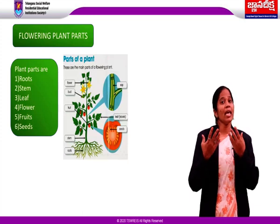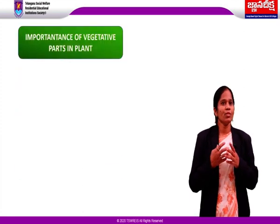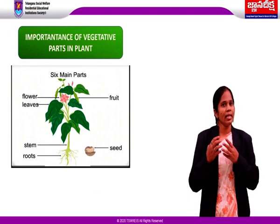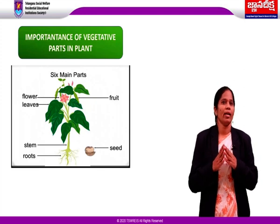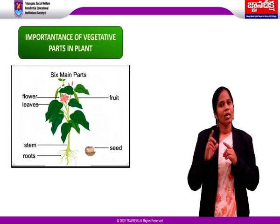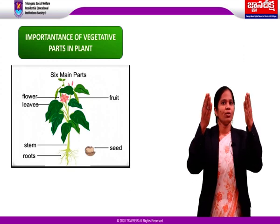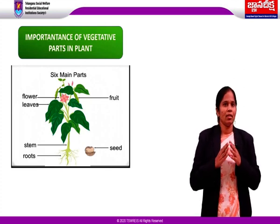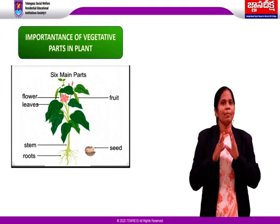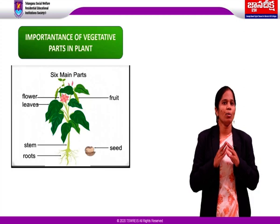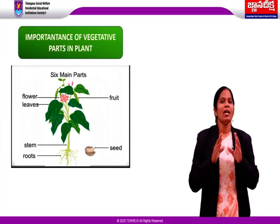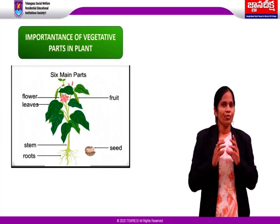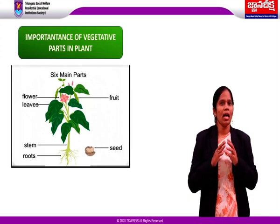Now we will discuss the importance of vegetative parts in plants. First, roots absorb water and minerals from soil and help fix the plant in the soil. Second, stem helps in transportation of water, minerals, and food materials. Third, leaves help in preparation of food with the help of chloroplasts. Fourth, flowers help in formation of fruit and seeds. Fifth, fruits and seeds help in reproduction.